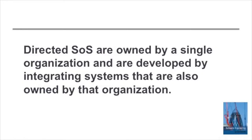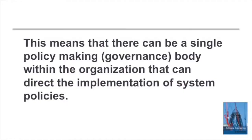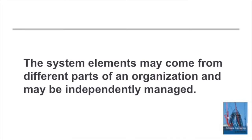Meyer took into account the ways in which the systems of systems were governed. A directed system is one where all of the constituent systems within a system of systems are owned and managed by the same organization. That is important because it means there can be a single policy maker, so the organization can make top-down decisions about functionality and where that functionality is to be provided within the system of systems. That doesn't mean there's a single manager for all of the systems — the independent systems may be independently managed within the organization.